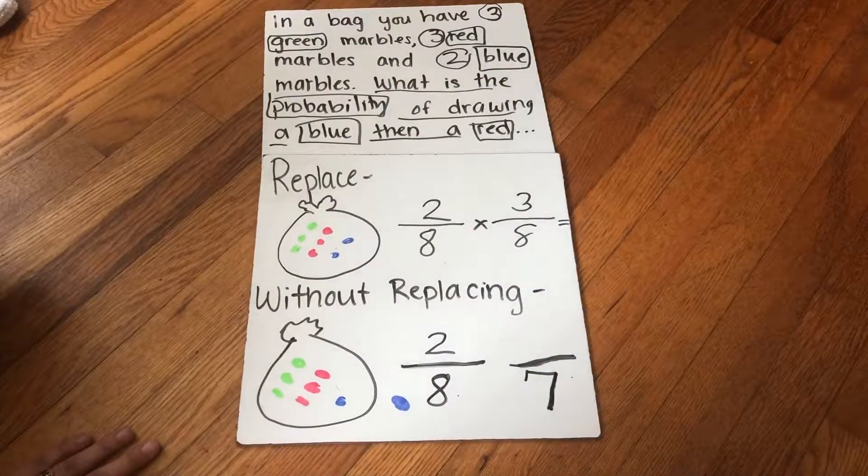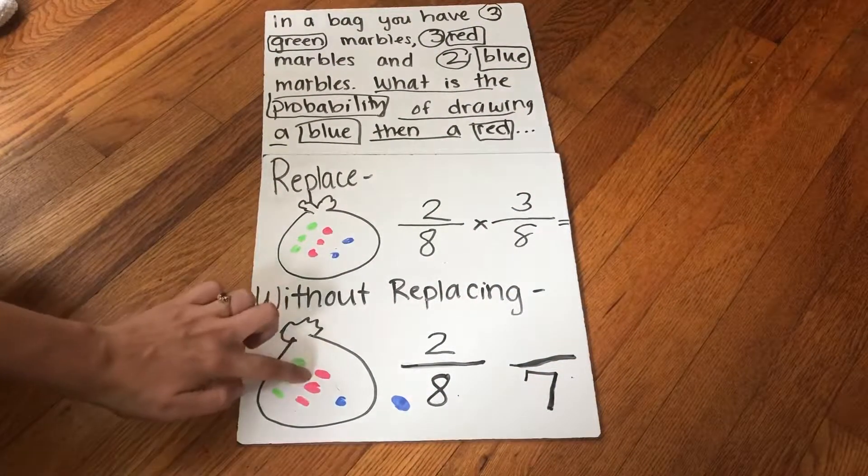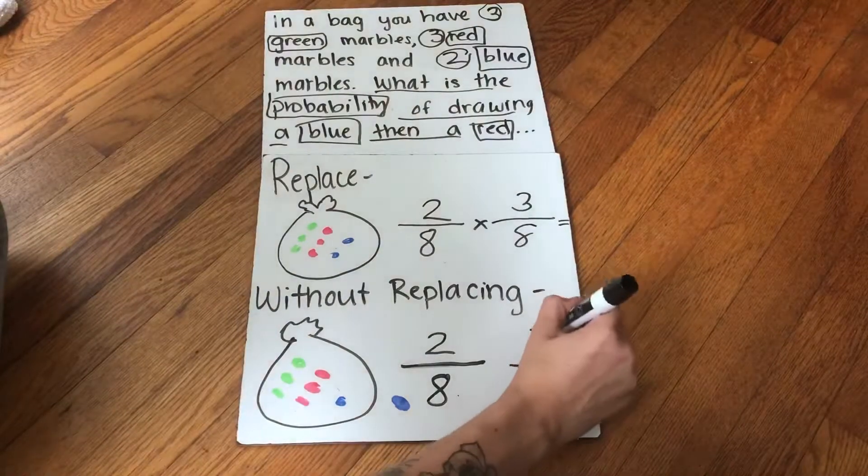And it's saying, what's the probability of drawing a red? Well, there's three red, three out of seven.